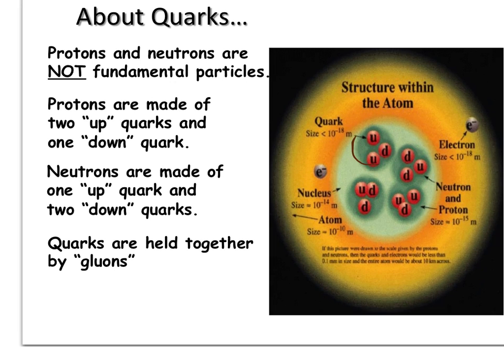So, you can see right here that there's a proton. Each up quark is said to have a plus two-thirds charge. So, if you have two up quarks and then a down quark is said to have a negative one-third charge.